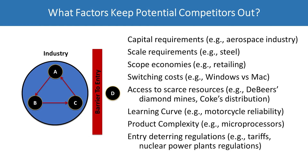Some factors that keep competitors out: capital requirements of the industry — for instance, getting into the aerospace industry is not cheap, it's not like opening a coffee shop. Scale requirements are also important: in commodity markets like steel, you have to produce lots of product to spread fixed costs over many units, and to achieve that economy of scale you need a lot invested in production technology. Affording the equipment and getting enough customers to sell at that volume are both high barriers to entry.